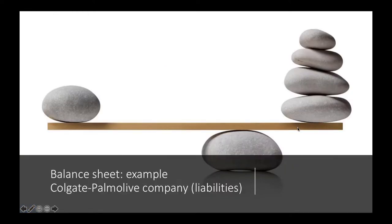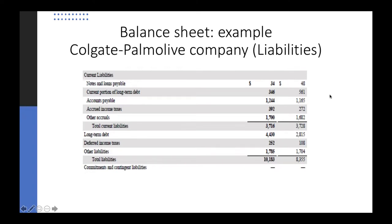The liability section of the balance sheet is also expressed in a liquidity format — beginning with current liabilities followed by long-term liabilities. Long-term liabilities such as bonds, deferred taxes, bank loans, and debentures are paid in the future, after one, two, or three years. Current liabilities are to be paid whenever they become due, mostly within a short period not exceeding one year.